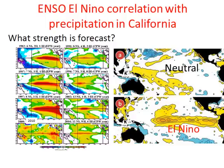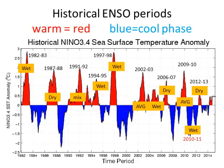Let's get into the El Niño strength and forecast. Historically, this is what El Niño has brought to the region. The big El Niño years — 1982-83 and 1997-98 — were very wet.